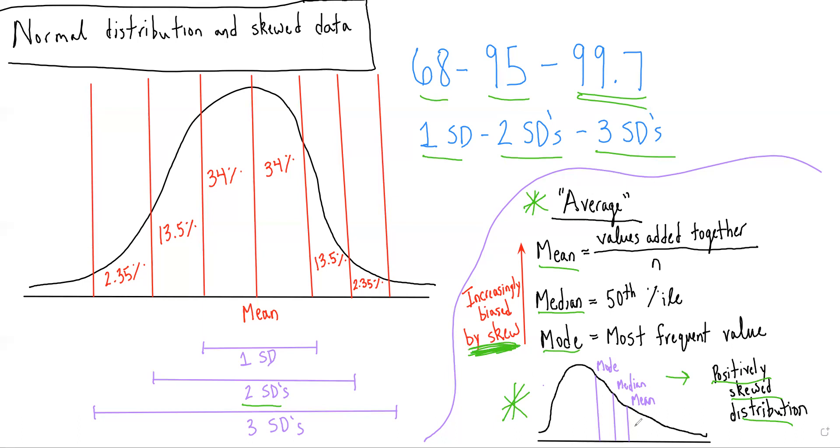So we can see if they drew three lines and asked which one's the mode, which one's the median, which one's the mean - the mean, because it's the most affected by the skew, would be furthest to the right. The median would be next, and the mode would be most to the left because it's the least affected by the skew.